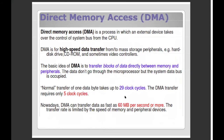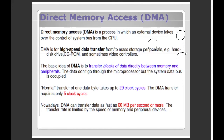Direct Memory Access — we need to directly access the memory. When we access the memory, we can access the CPU to the other device. Our memory and external device communicate directly. This is our CPU, this is our external device, and this is our memory.